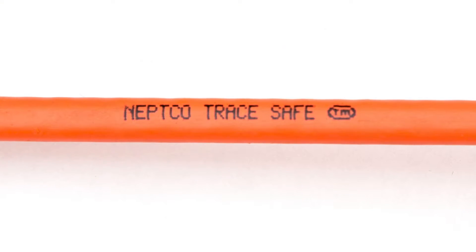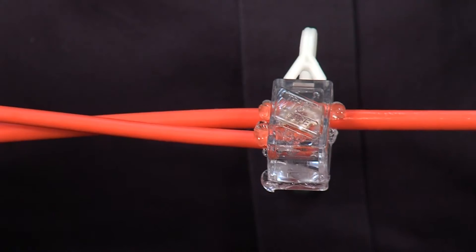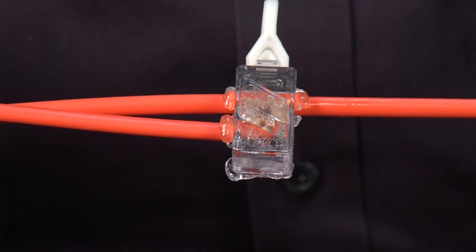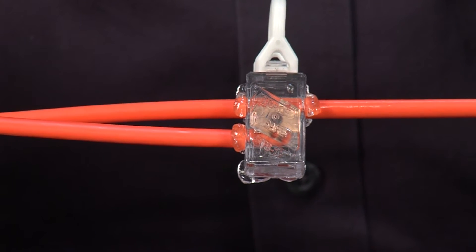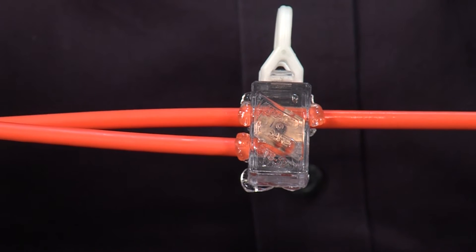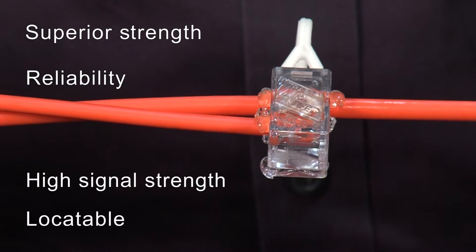AT&T has specified the TraceSafe Locating System for all fiber installations. The system, which includes high-strength water block tracer wire and a variety of gel-filled connectors, may be new to you. However, it has been tested extensively and chosen because of its superior strength, reliability, high signal strength, and locatability.